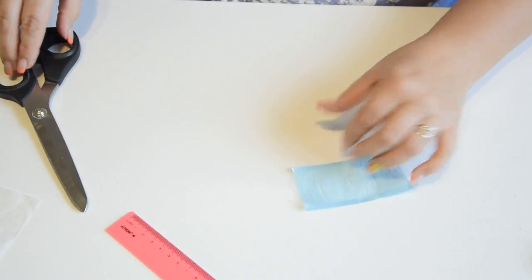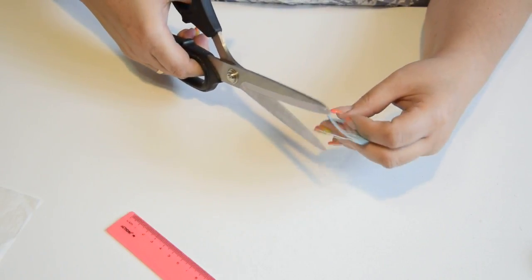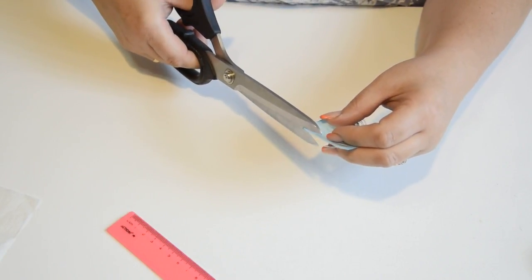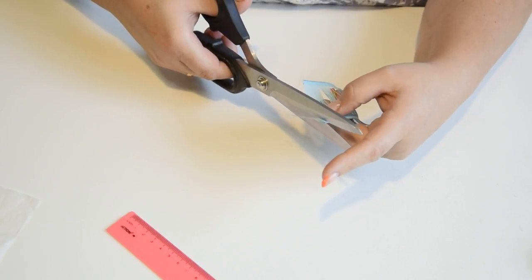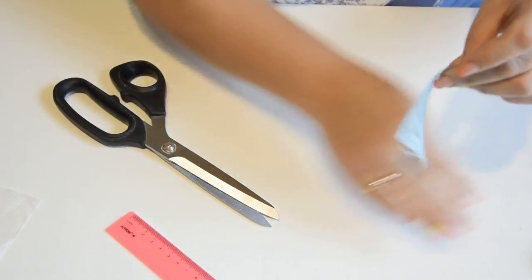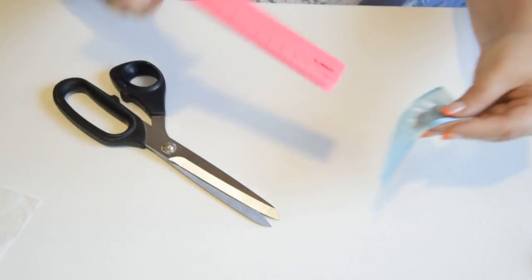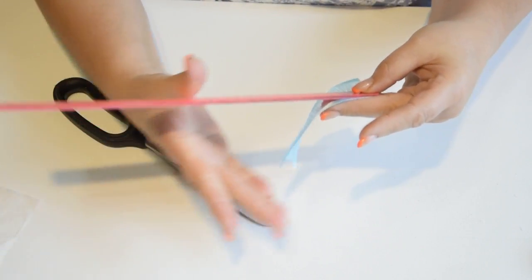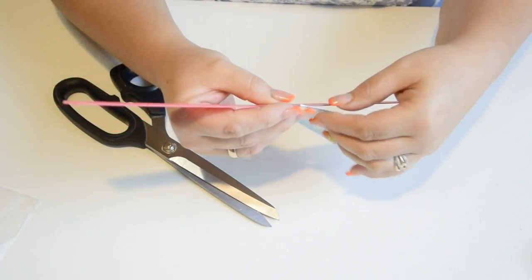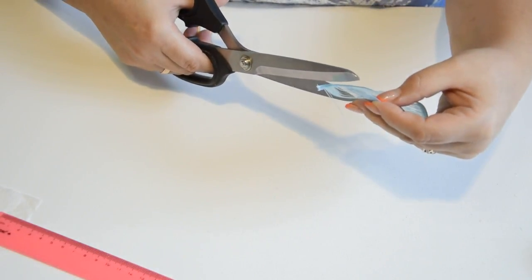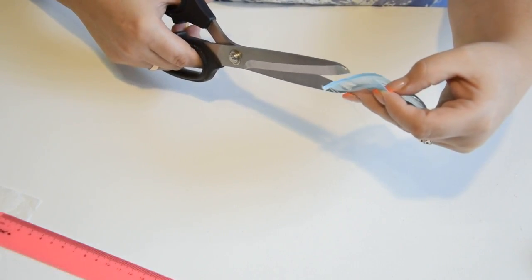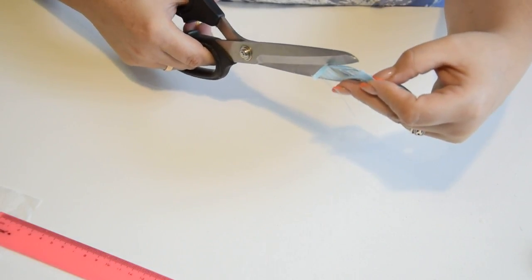First we process the ribbon on one side and trim it. From the finished edge we measure 8 cm and bring our piece to the size we need.